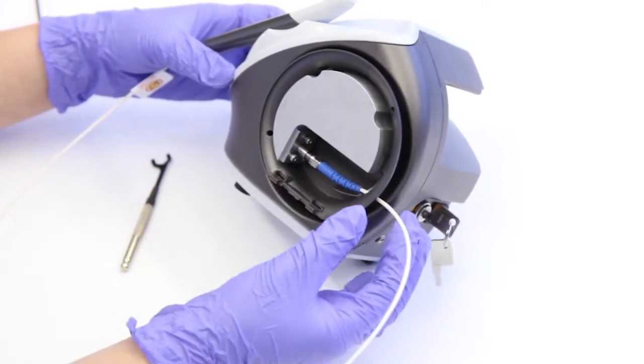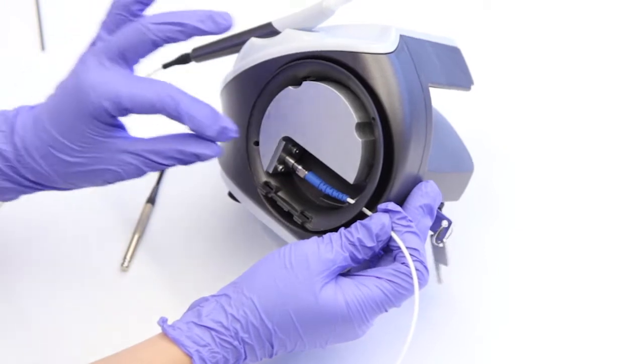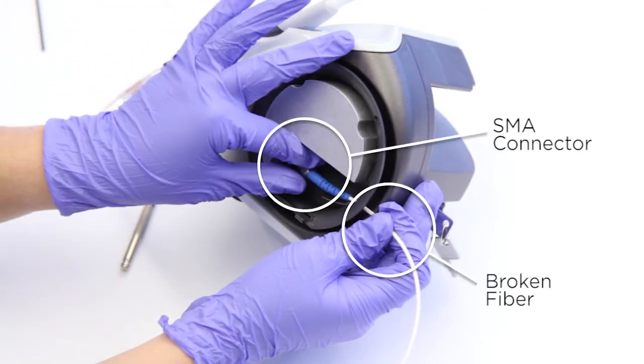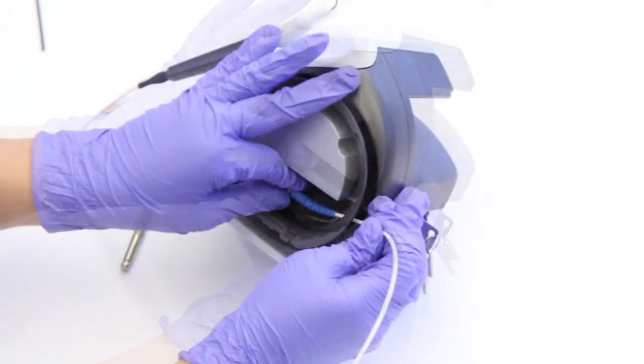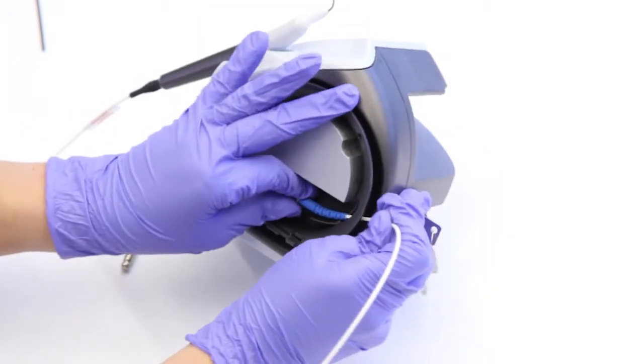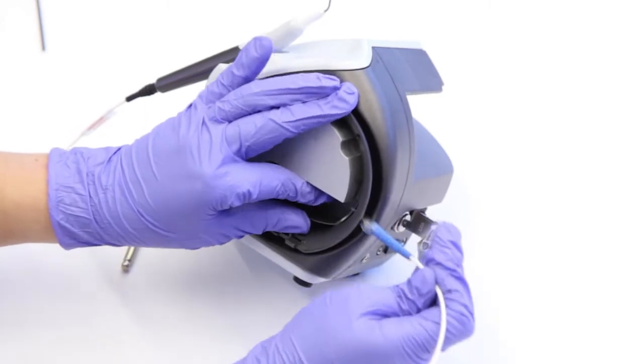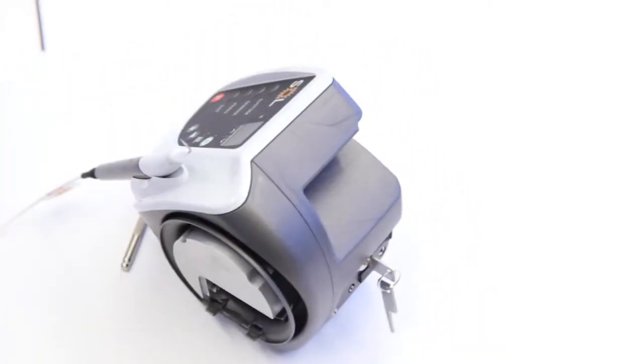To remove the fiber, firmly grip the SMA connector with your left thumb and forefinger while gently pinching the fiber exiting the wind body with your right thumb and forefinger. Simultaneously pull the SMA connector and fiber to the right away from the diode aperture until the fiber is removed from the wind body.